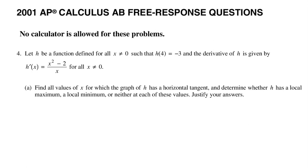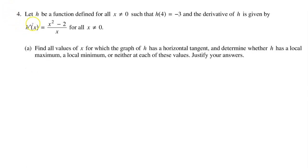In this video, I will walk you through free response question number 4 from the 2001 AP Calculus exam. Let h be a function defined for all x not equal to 0, such that h(4) is equal to negative 3, and the derivative of h is given by this function, for all x not equal to 0.